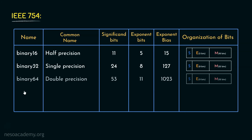Coming to the next one, it is Binary 64, which is commonly known as double precision, where 53 bits are specified for the significant and 11 bits are used for the exponent, which has the exponent bias of 1023. The organization of bits is: the MSB is dedicated for the sign bit, followed by 11 bits for the exponent, and finally the remaining 52 bits are used to represent the mantissa portion.